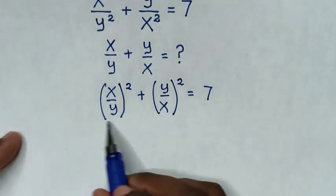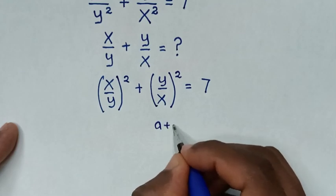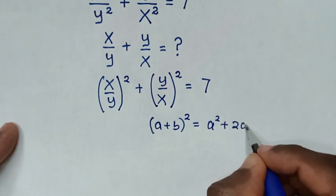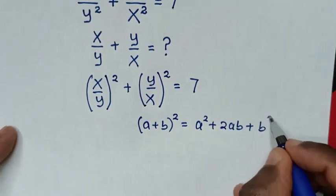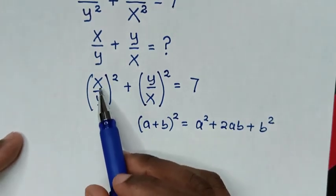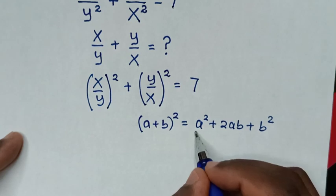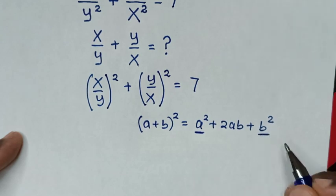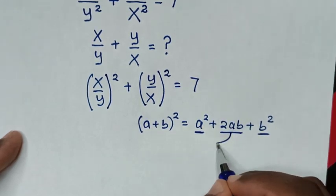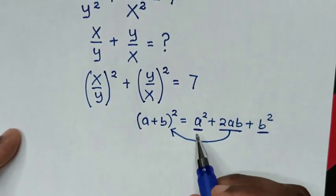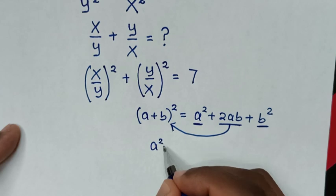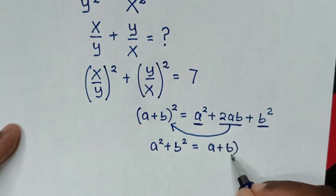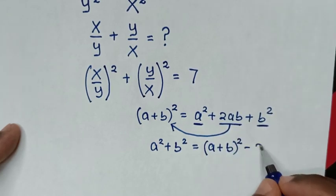In the next step, we'll apply the rule: (a + b)² = a² + 2ab + b². When we compare, (x/y)² is a² and (y/x)² is b². Then we take the 2ab to this side, so it will be a² + b² = (a + b)² minus 2ab.